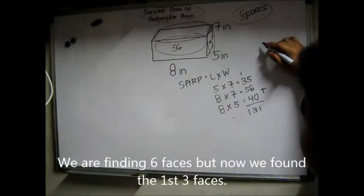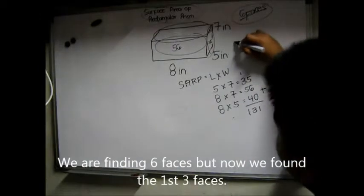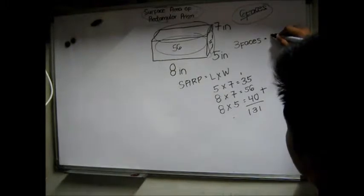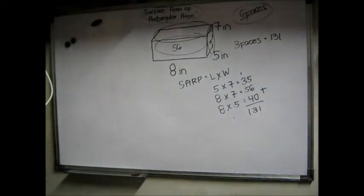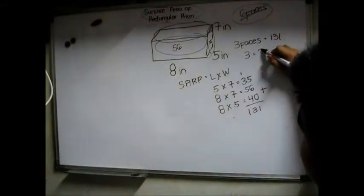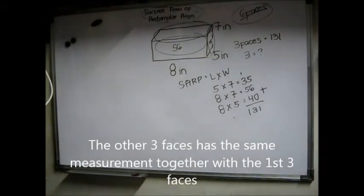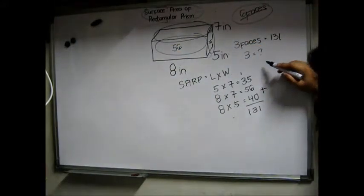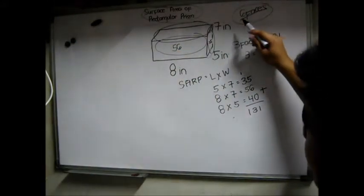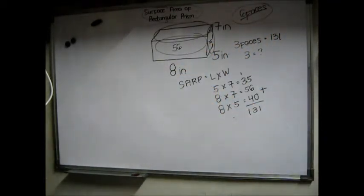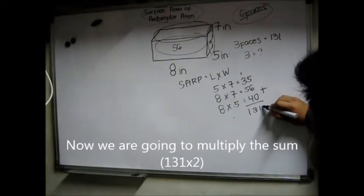And we just found out that the three faces equals 131. Now what are the other three faces? Don't worry because this rectangular prism, the six faces have the same measurement. So we are going to multiply the sum by 2.